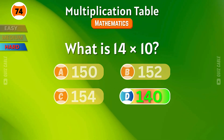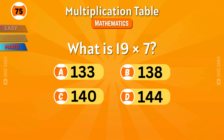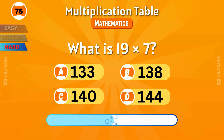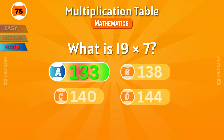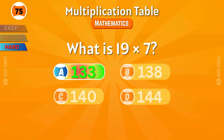What is 14 times 10? Correct — 140. What is 19 times 7? That equals 133.